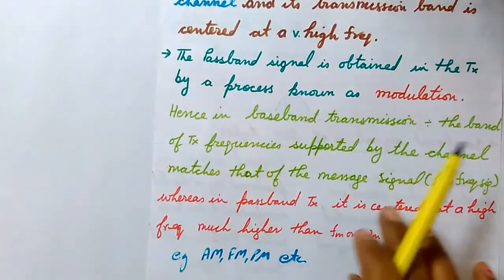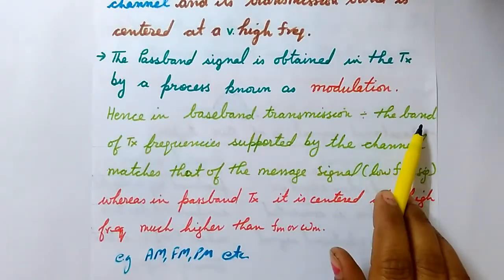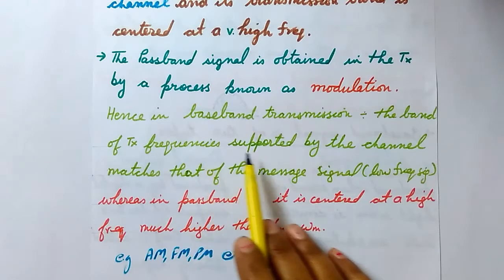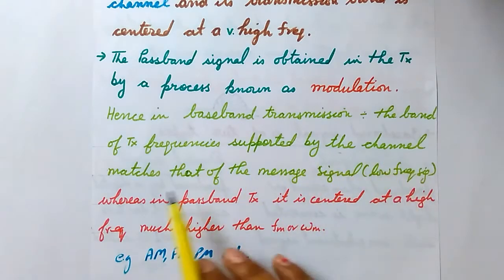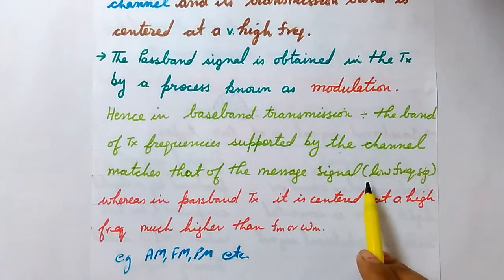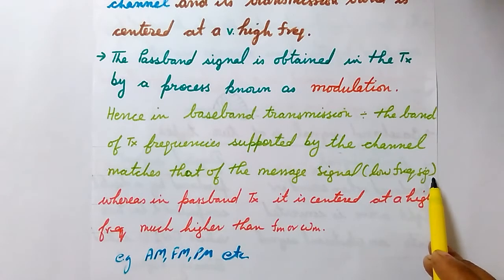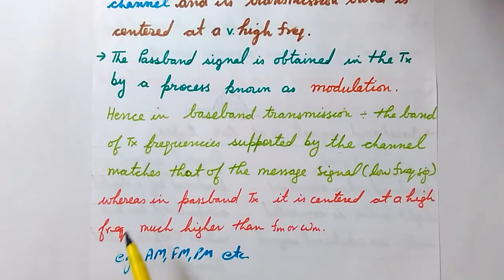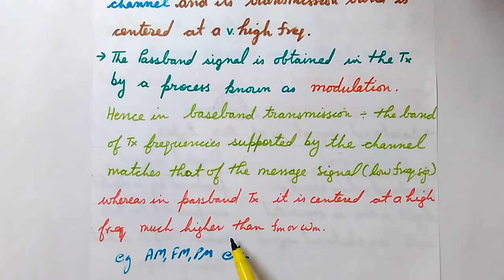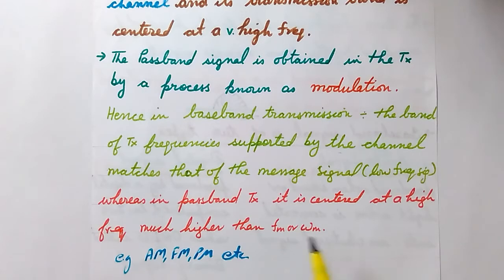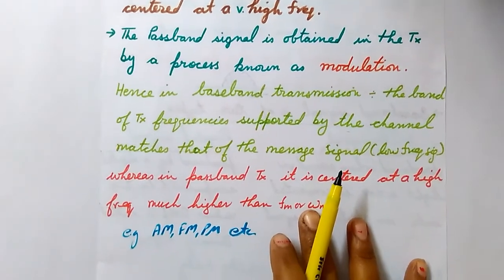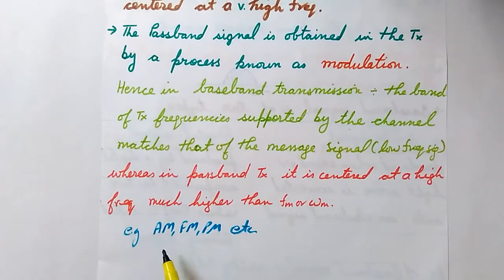In baseband transmission, the band of transmitted frequencies supported by the channel matches that of the message signal — a low frequency signal — and is meant for small distance communication, like in walkie-talkie. Whereas in passband transmission, it is centered at a very high frequency, much higher than fm or ωm, which is the highest frequency component of the message signal. Examples of passband signals are AM, FM, PM, or other modulated signals.